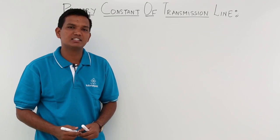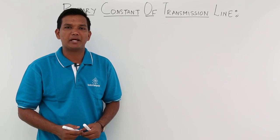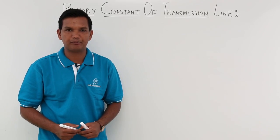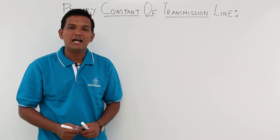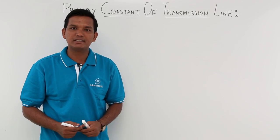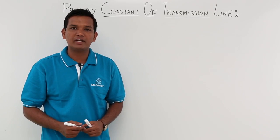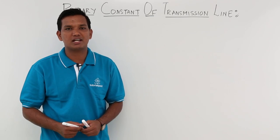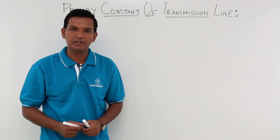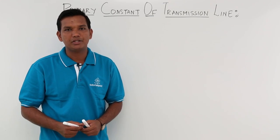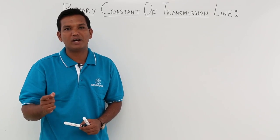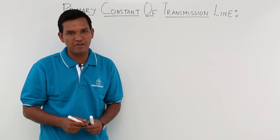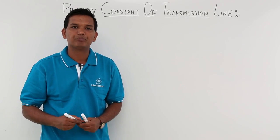In this class, we will discuss the primary constants of the transmission line. As we have already discussed, for any transmission line you have to consider the transient time effect when the length of the wire is comparable with the wavelength of the transmission line.